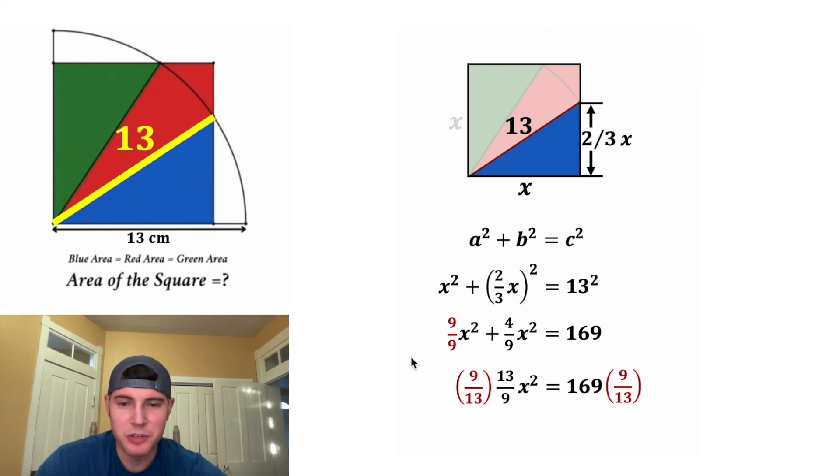Let's multiply both sides by the reciprocal 9 thirteenths. On the left-hand side, we just have x squared, and on the right-hand side, we'll have 117.